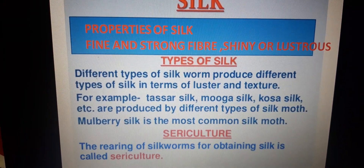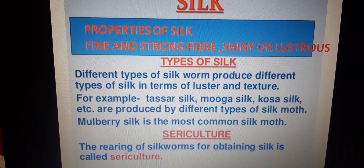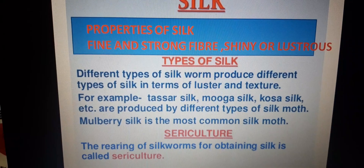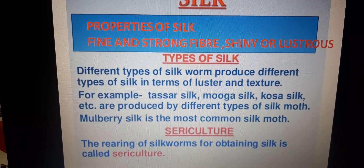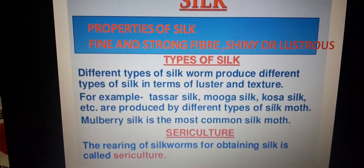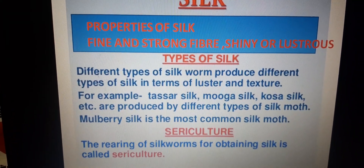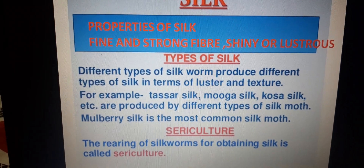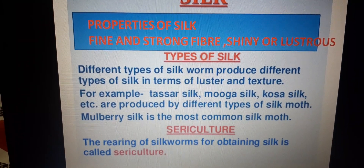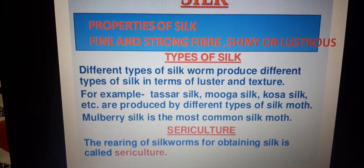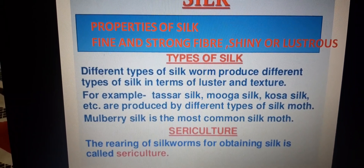Mulberry silk is the most common silk moth and gives the best quality of silk. The silk moth which produces mulberry silk eats the leaves of the mulberry tree. Tashar silk is mostly produced in Madhya Pradesh, Orissa, and Bihar. The silk moth which produces tashar silk eats the leaves of the arjun tree. Muga silk is produced in Assam. Eri silk is produced in Assam and Orissa, and the silkworms which produce eri silk feed on castor leaves.